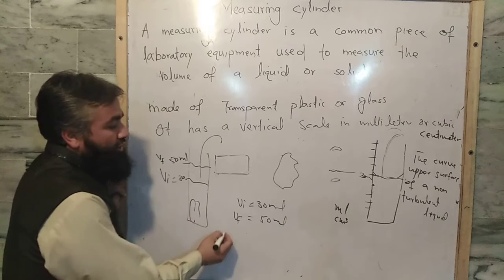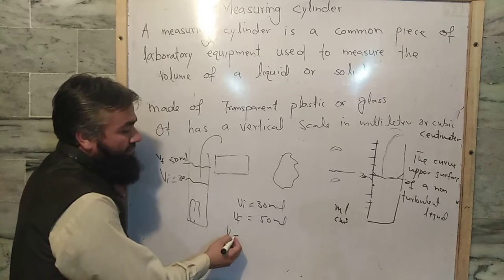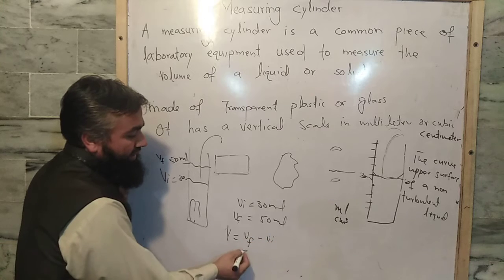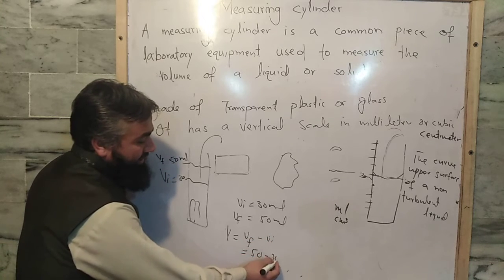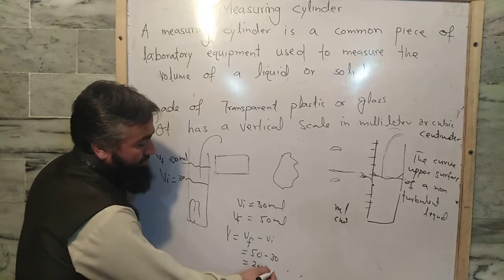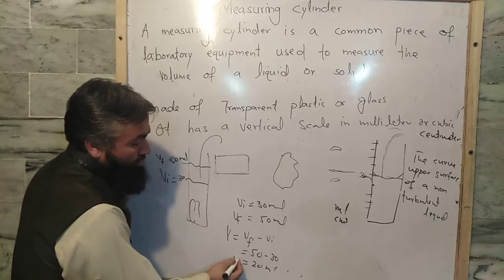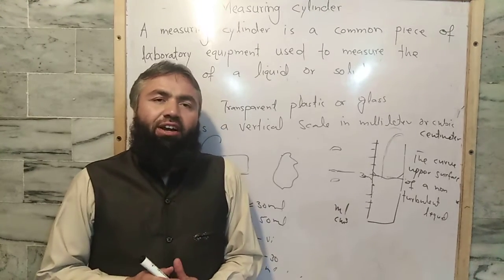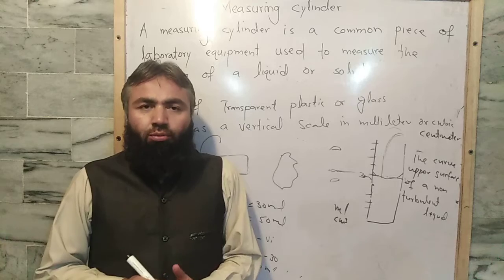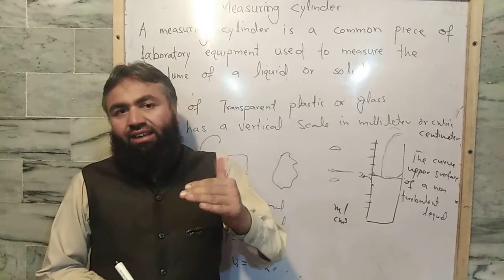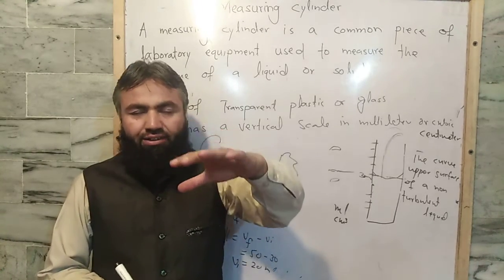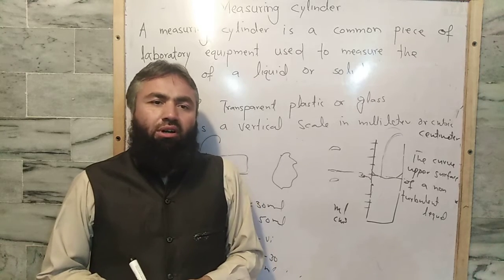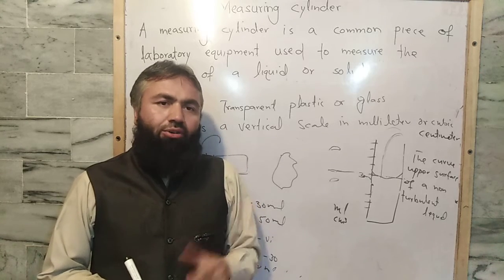So the volume of the solid will be the final volume minus the initial volume: 50 minus 30 milliliters, which equals 20 milliliters. This is the process by which we can find the volume of a liquid as well as that of a solid object. Today this was our topic.